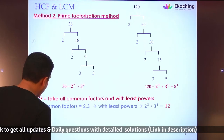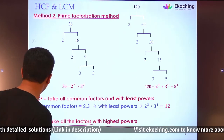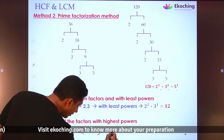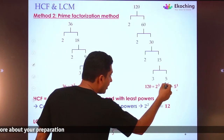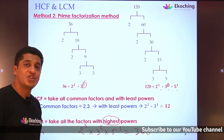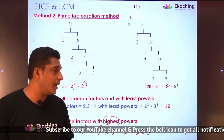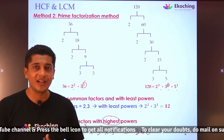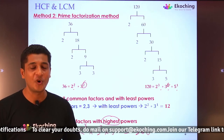Similarly, for LCM using prime factorization: take all factors with the highest powers. Factors are 2, 3, and 5. Highest power of 2 is 2³ (cube), highest power of 3 is 3² (square), and 5¹. Prime factorization is a vital method for finding HCF and LCM. We have found both HCF and LCM using prime factorization.